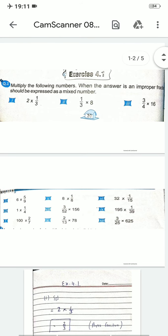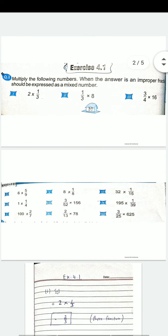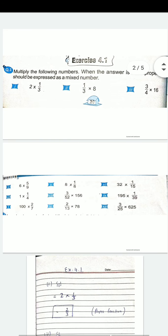آج ہم start کریں گے exercise 4.1 کیونکہ یہ بہت important exercise ہے اور اس سے آپ کے concepts clear ہو جائیں گے۔ سوال غور سے پڑھیں: 'Multiply the following numbers.' یہ سب سے پہلا سوال ہے — multiply کرنا ہے۔ اب اگلا: 'when the answer is in improper fraction, that should be expressed as a mixed number' — یعنی کہ whole number والی form میں express کرو گے۔